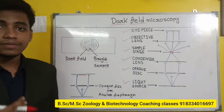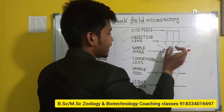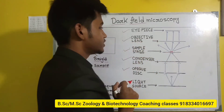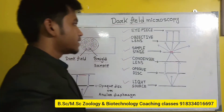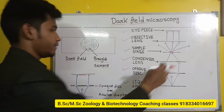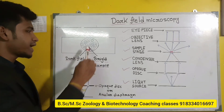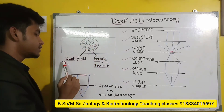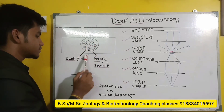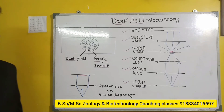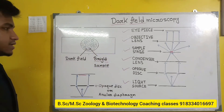Those diffracted light rays which are captured by the objective lens will then be captured by the eyepiece, and the image of the sample will form. The image forms in such a manner that the background or field will appear in dark color, and the sample present on this field in the glass slide will appear in bright color.